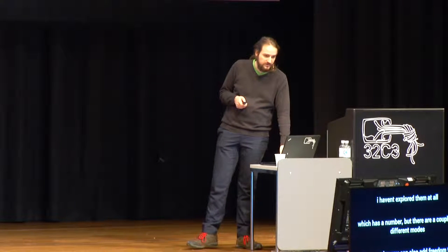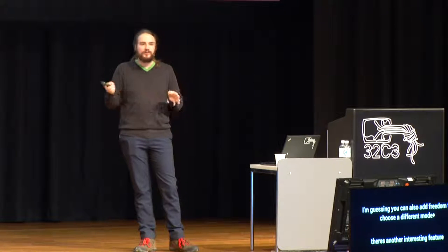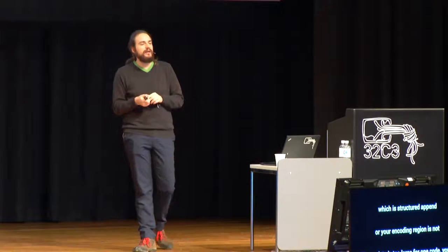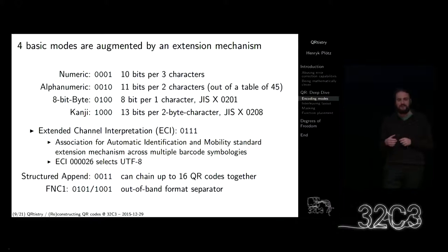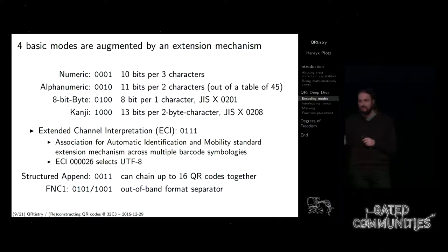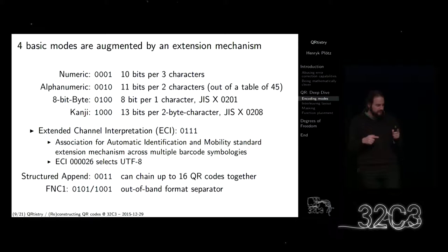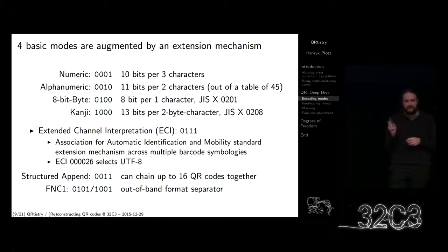Außerdem gibt es noch ein weiteres Feature, das ich noch nie gesehen habe — es nennt sich Structured Append. Wenn all die Daten nicht in einen Code passen oder wenn der Bereich nicht quadratisch ist, dann kann man mehrere Codes zusammensetzen, bis zu 16. Alle diese QR-Codes haben dann eine Prüfsumme und jeder der Codes hat einen Index. Die App fordert dann auf, die anderen QR-Codes zu scannen. Der weitverbreitetste Reader ist vermutlich der Barcode-Reader für Android — der unterstützt das nicht. Aber mein altes Nokia-Phone kann das tun.